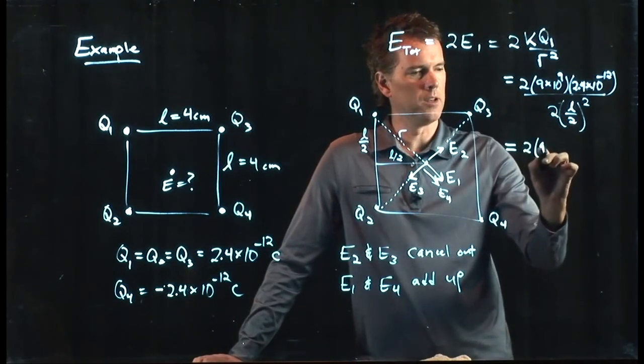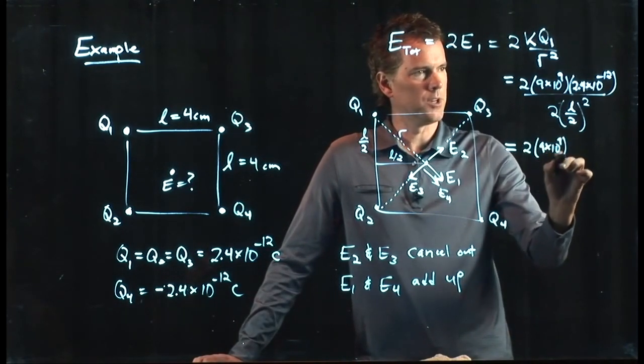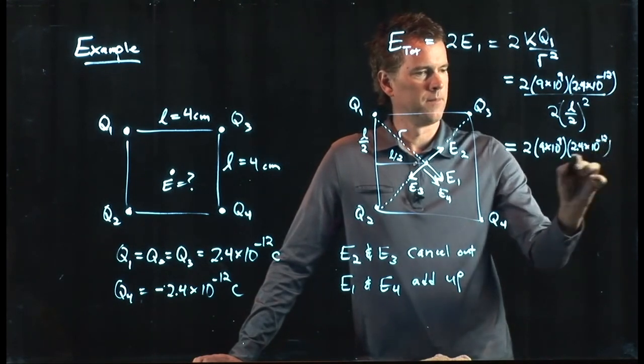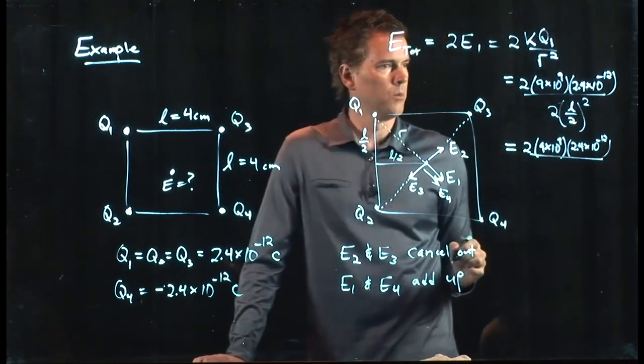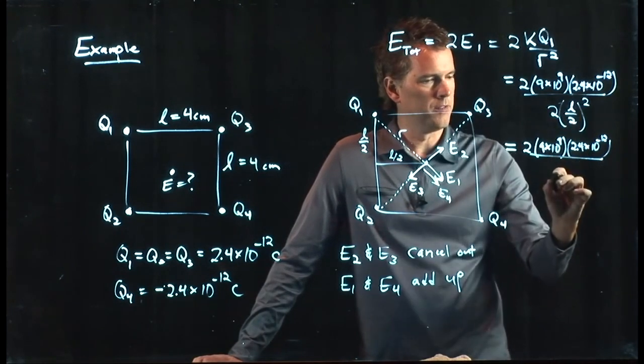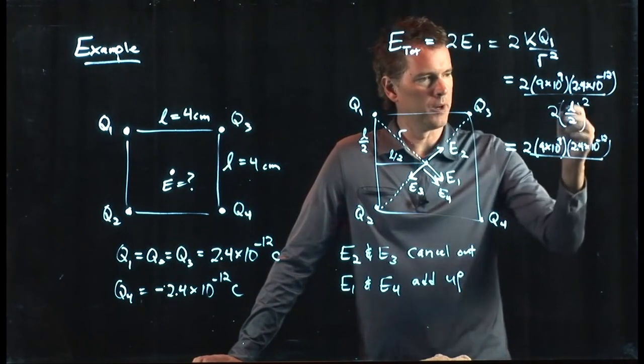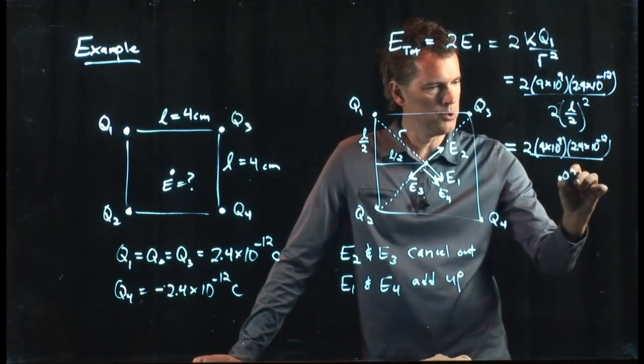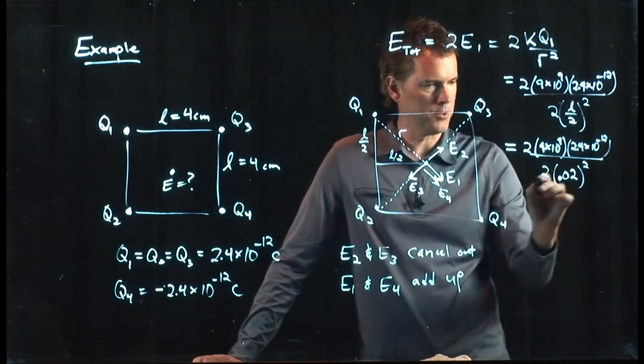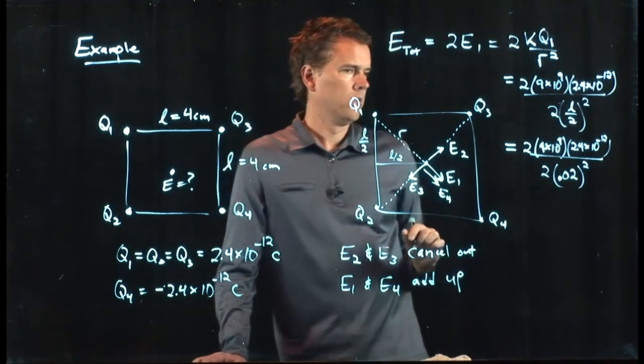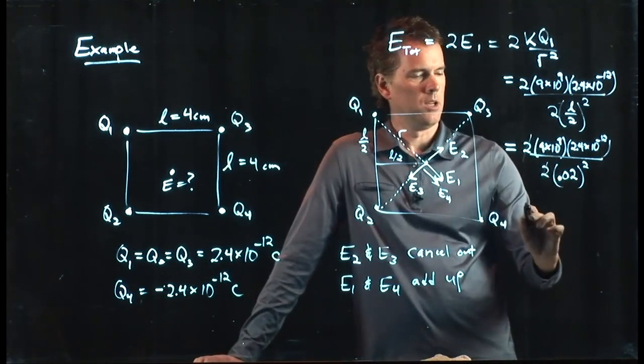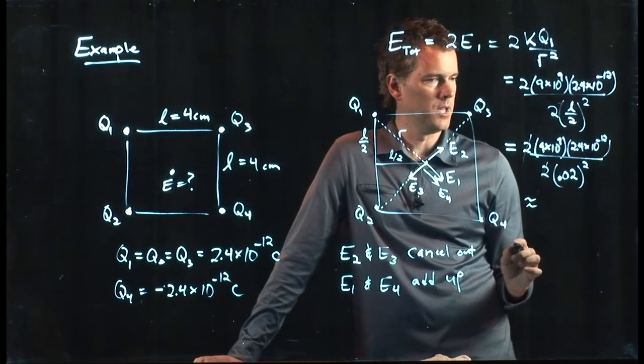So now we can plug all this in to your calculator. We've got L, we said was 4 centimeters, so 4 centimeters there is 0.04, but we're going to divide it by 2, so that's 0.02. We're going to square that, and then we have a 2 out in front of it. That's convenient because that 2 is going to cancel with that 2.